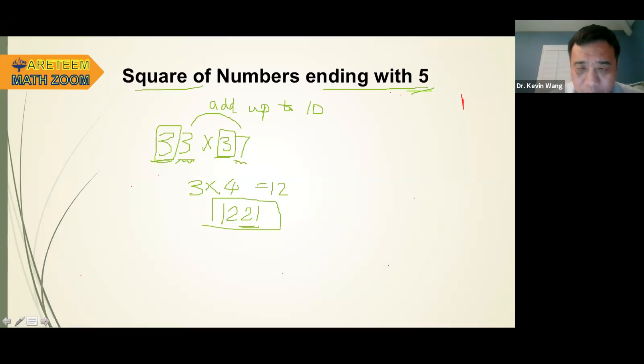So let's try it again. Let's try another number. 41 times 49. This one, the 10 digits are both four. And the unit digits, one plus nine is 10. Let's do this. We can do four times five. 4 times 5 is 20. And we have 1 times 9 is 9. But no, we don't want to just attach 9 here, because it's a four digit number. We're going to put 20 here, and we put 09 here.